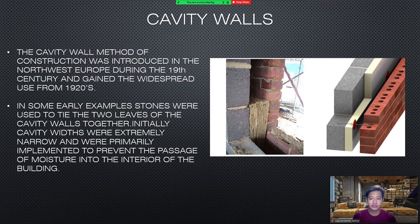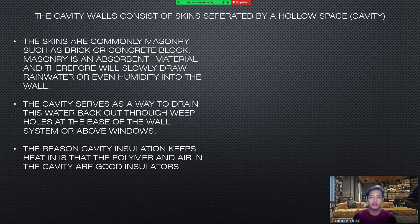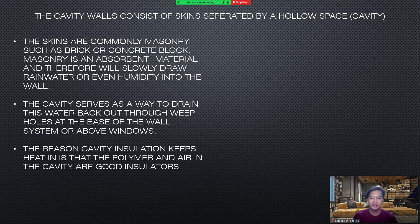The cavity wall method of construction was introduced in Northwest Europe during the 19th century and gained widespread use from the 1920s. In some early examples, stones were used to tie the two leaves of the cavity wall together. Initially, cavity widths were extremely narrow and were primarily implemented to prevent the passage of moisture into the interior of the building. The cavity walls consist of two skins separated by a hollow space cavity. The skins are commonly masonry such as brick or concrete block. It is an absorbent material and therefore will slowly draw rainwater or even humidity into the wall. The cavity serves as a way to drain this water back out through weep holes at the base of the wall or above windows. Cavity insulation keeps heat in because the polymer and air in the cavity are good insulators.